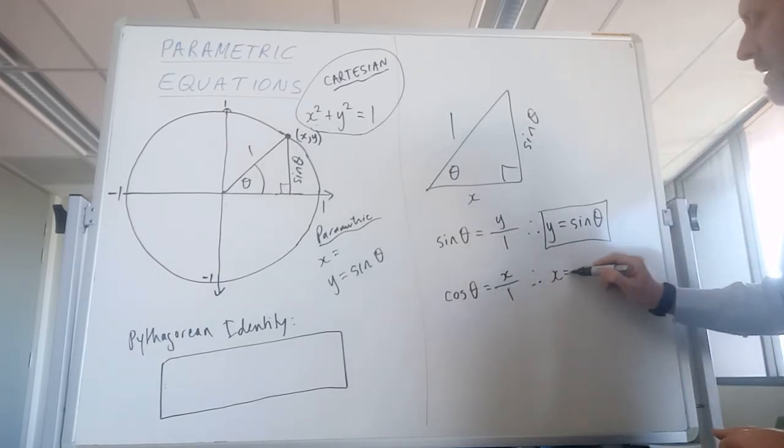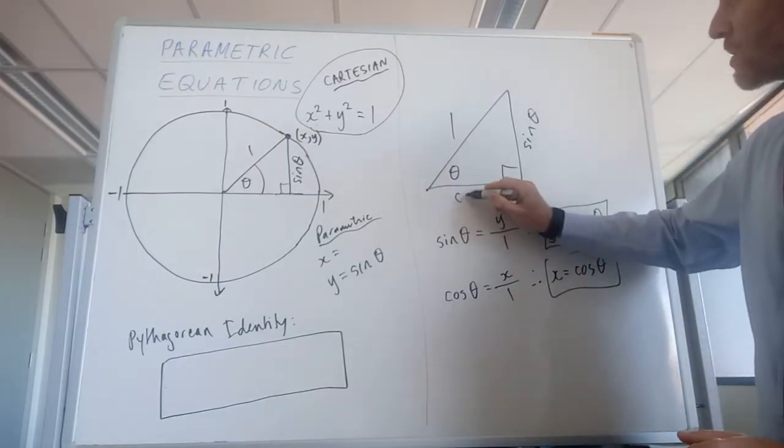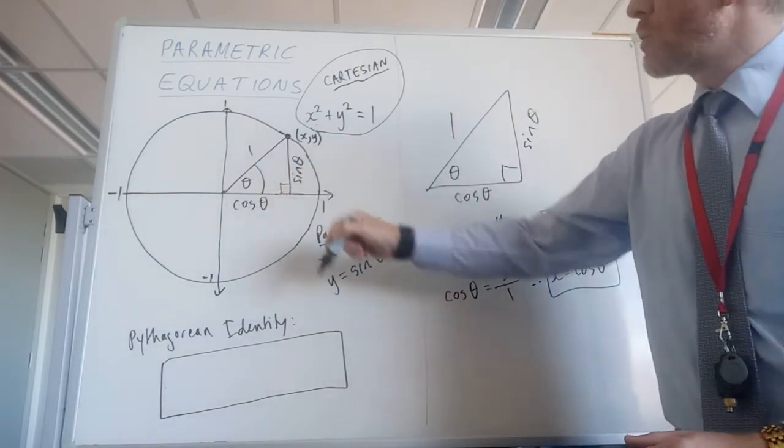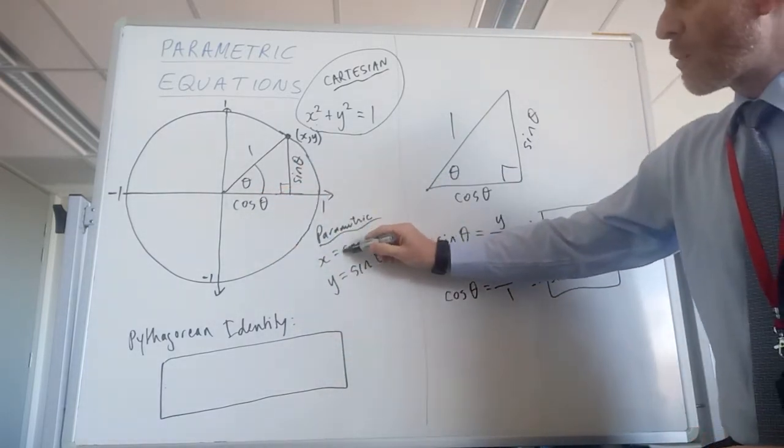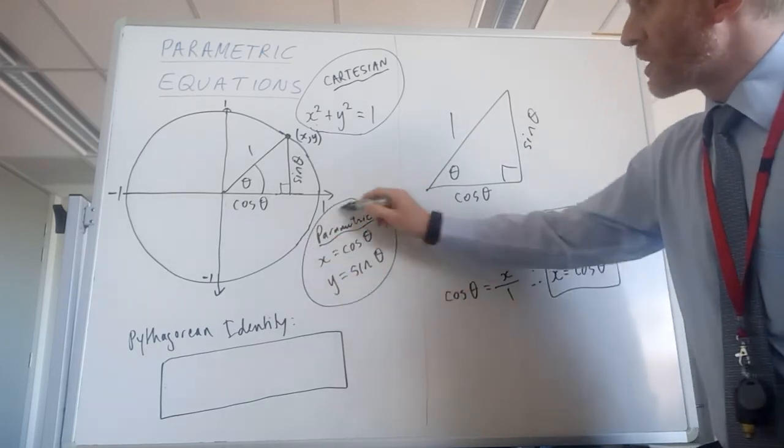Therefore, x equals cos theta, so I can replace x with cos theta. And so now we know that the second parametric equation, well, actually the first one, is x equals cos theta.